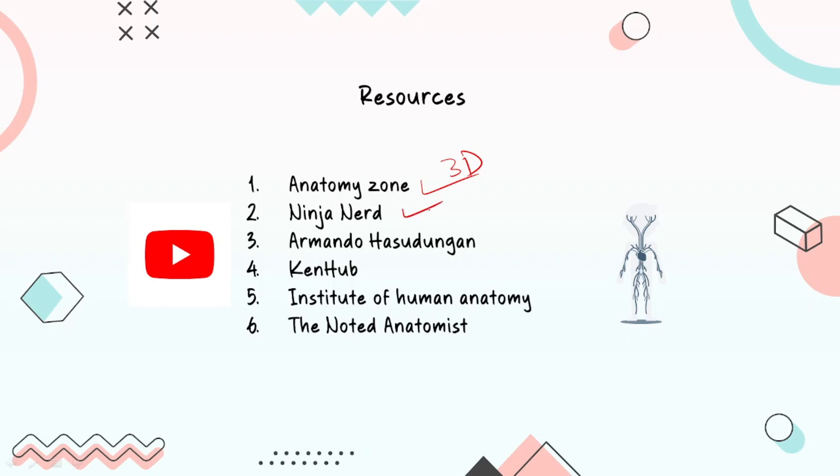Ninja Nerd I have used for real models because Ninja Nerd is great for OSPEs or OSCEs. Ninja Nerd uses 3D models to teach and that to me was great. Armando is great if you want to learn different nerves and different structures. The Noted Anatomist is great about nerves.